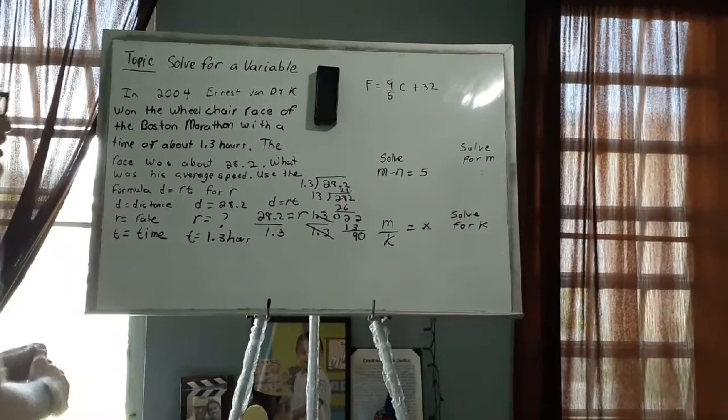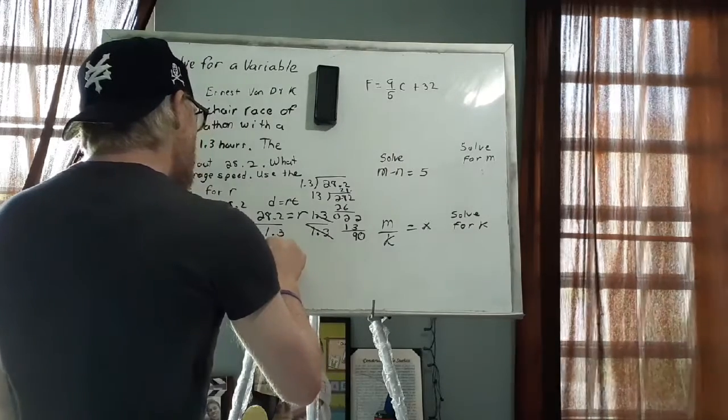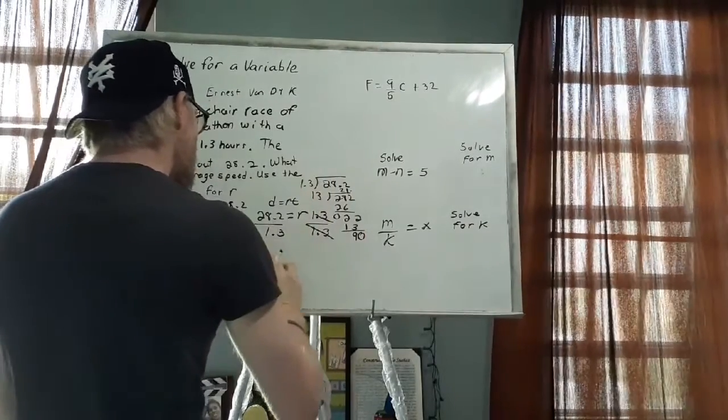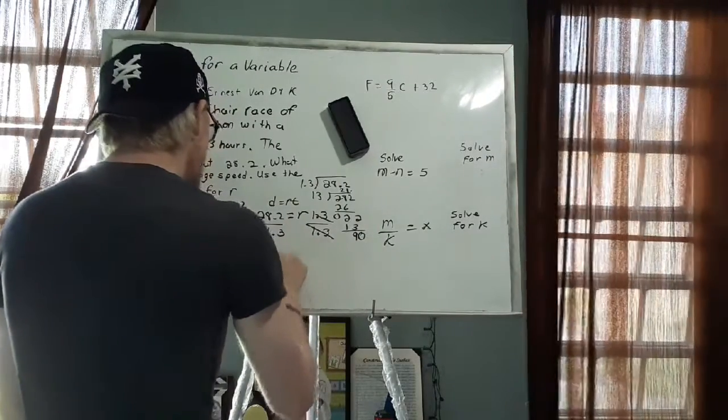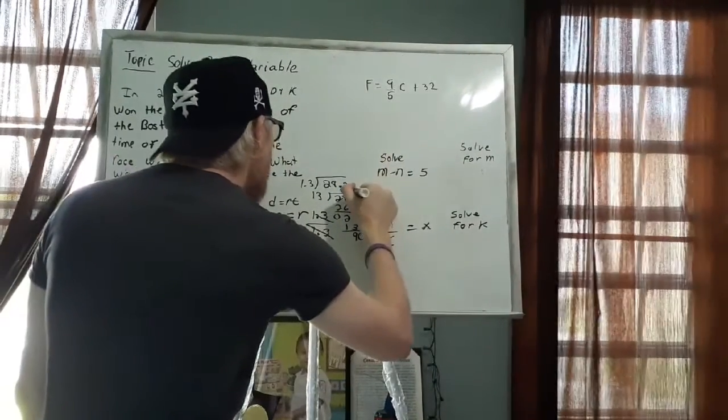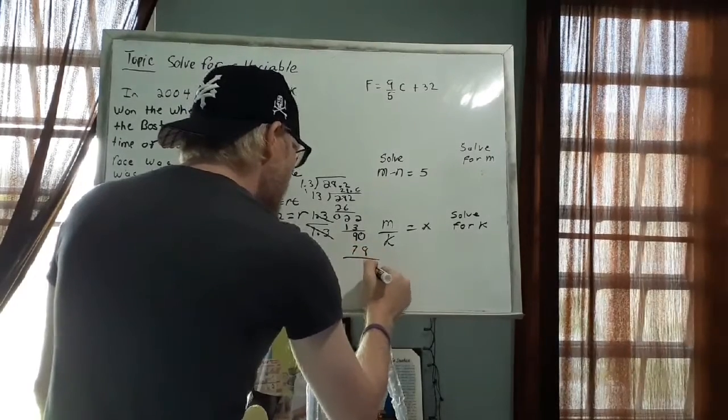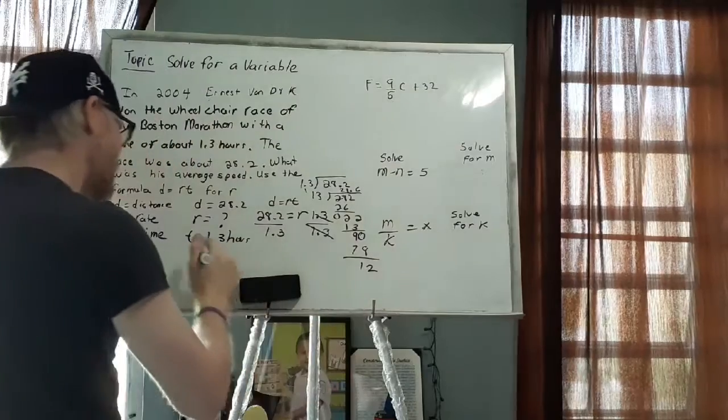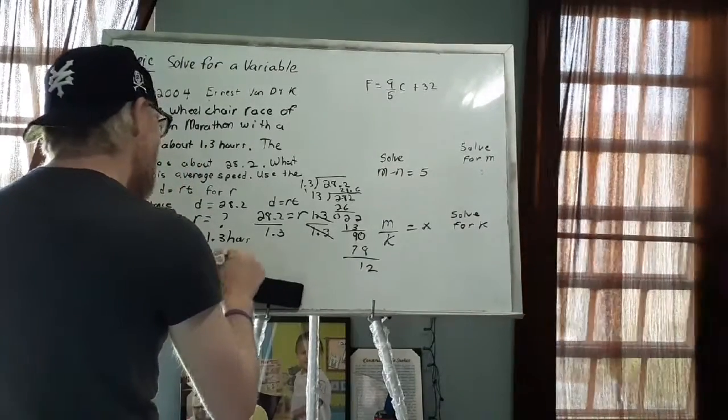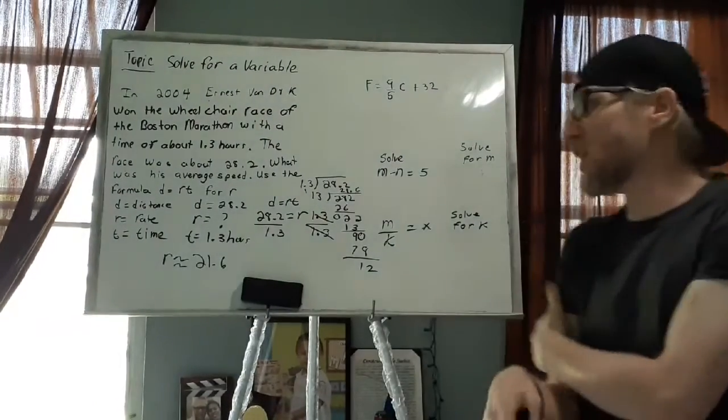So we just kind of turn it into a decimal, kind of put a 0 here and 90. And I think of a number that when I multiply by 13 equals 90 or something close to 90. And we can say more or less 13 times 6 or 7. Let's see if 7 will work. 7 times 3 is 21, 7 times 1 is 7, that's 91. So 7 doesn't work. So we'll use 6. 6 times 3 is 18, carry 1. 6 times 1 is 6, plus 1 is 7. So that would be 90 minus 78, which would be 12. So we're going to say that our answer is approximately, r is approximately 21.6.